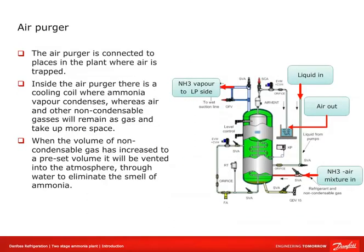The air purger is connected to places in the plant where air is trapped. Inside the air purger there is a cooling coil where ammonia vapor condenses, while air and other non-condensable gases remain in a gas state and take up more space. When the volume of non-condensable gas has increased to a preset volume, it is vented to the atmosphere through water to eliminate the smell of ammonia.